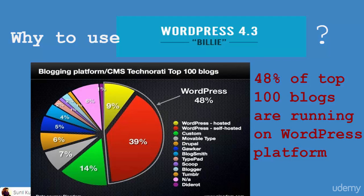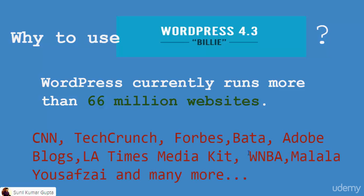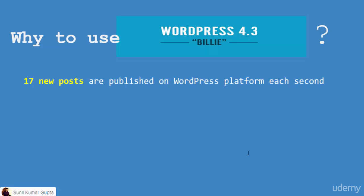A few more facts about WordPress: currently 66 million websites are running on WordPress — that's a rough estimate, and the actual number is much more. Some popular websites include CNN, TechCrunch, Forbes, Adobe Blogs, LA Times, NBA, Malala.org, and many more. Top tech companies use WordPress for their websites and blogs. Also, 17 new posts are published on the WordPress platform each second, which says much about its popularity.